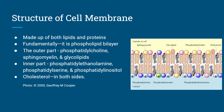The outer layer is made up of phosphatidylcholine, sphingomyelin, and glycolipids. The inner part is composed of phosphatidylethanolamine, phosphatidylserine, and phosphatidylinositol. Cholesterol is present on both sides. This side is the cytosol and this is the outside of the cell — separated by this wall, a strong wall.